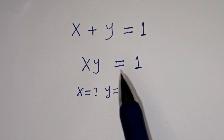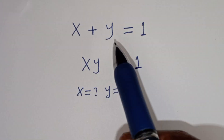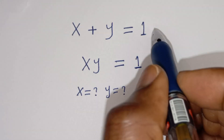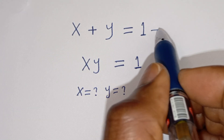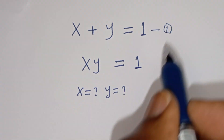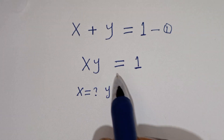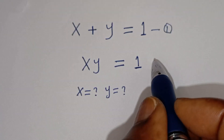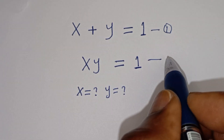From here, x plus y is equal to 1 — let's call this equation 1. And x times y is equal to 1 — let's call this equation 2.